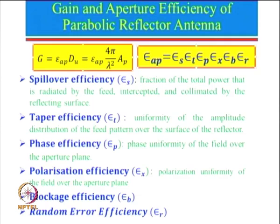The next efficiency is polarization efficiency, which depends upon the feed. For a linearly polarized antenna, we need to check the component in both planes. For circular polarization, the separation between LHCP and RHCP should be a minimum of 20 dB in the operating beam width.